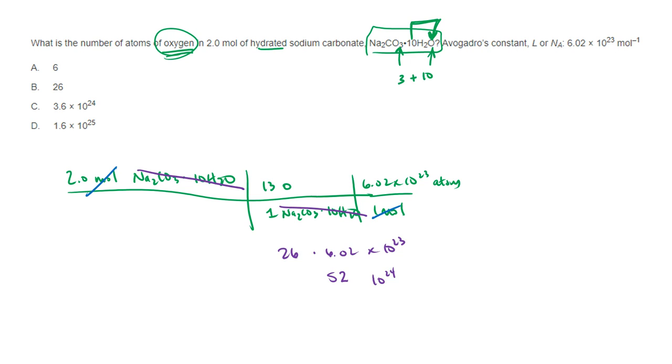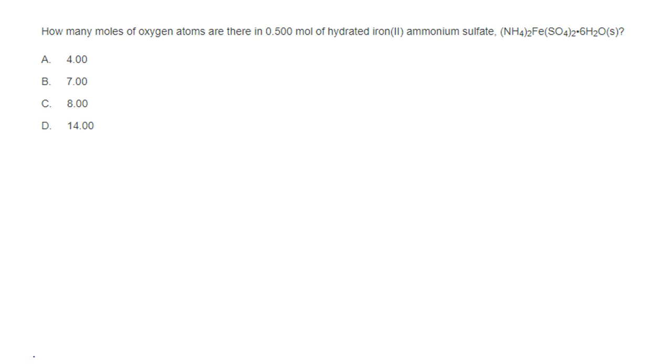Hold on. 26 times 6, I did 26 times 2. I don't know where that 2 came from. 26 times 6 is going to be 36 carrying 3, 6, 12, 13, 14, 15. Oh my gosh. 156 times 10 to the 23rd, which is going to be 1.56 times 10 to the 25th. We moved our decimal place 2 times. Sorry about that math. Somehow I multiplied by 2 instead of 6.